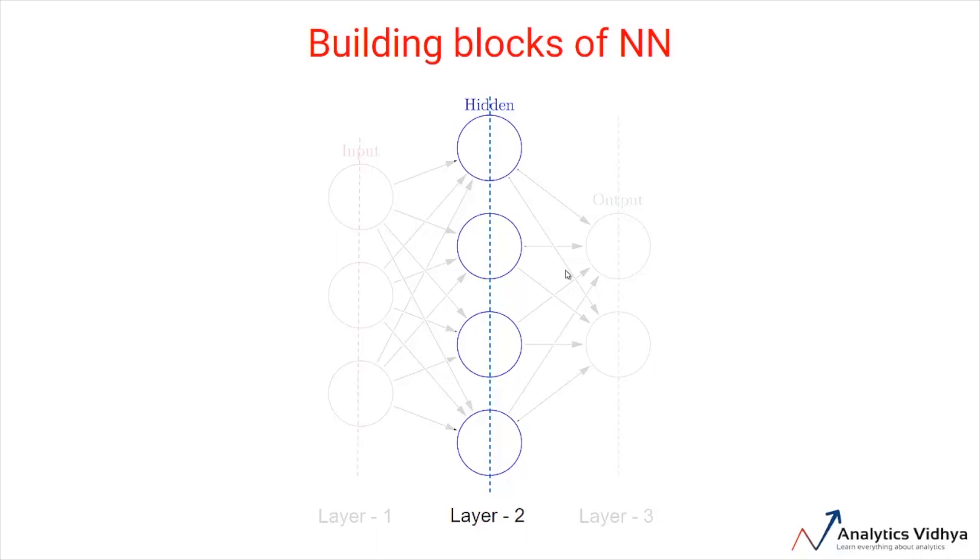Hidden layers are the ones actually responsible for the excellent performance and complexity of neural networks. They perform multiple functions at the same time such as data transformation, automatic feature creation, etc.